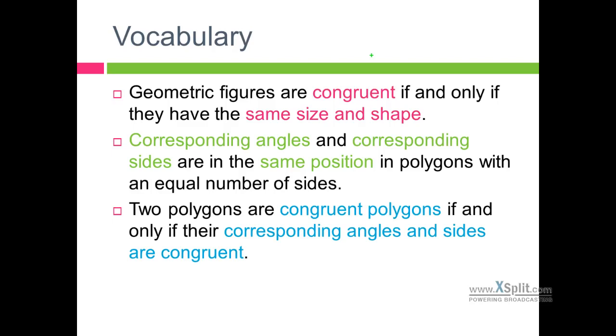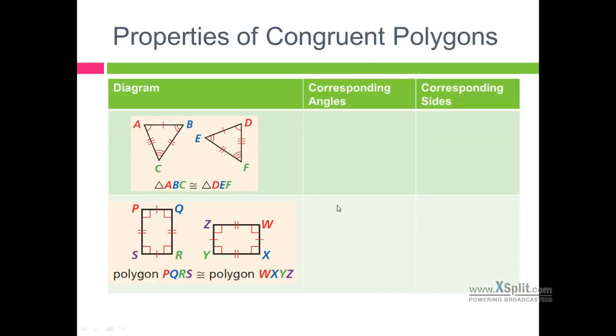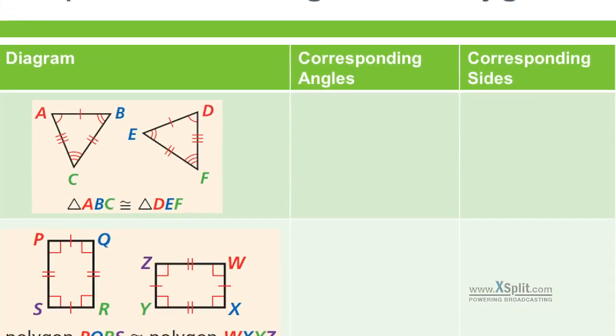They might be flipped versions of each other. They might be rotated versions of each other. But as long as they're the same shape, same size, that's what we're looking for. So we look at this triangle for example. We have triangle ABC and triangle DEF.